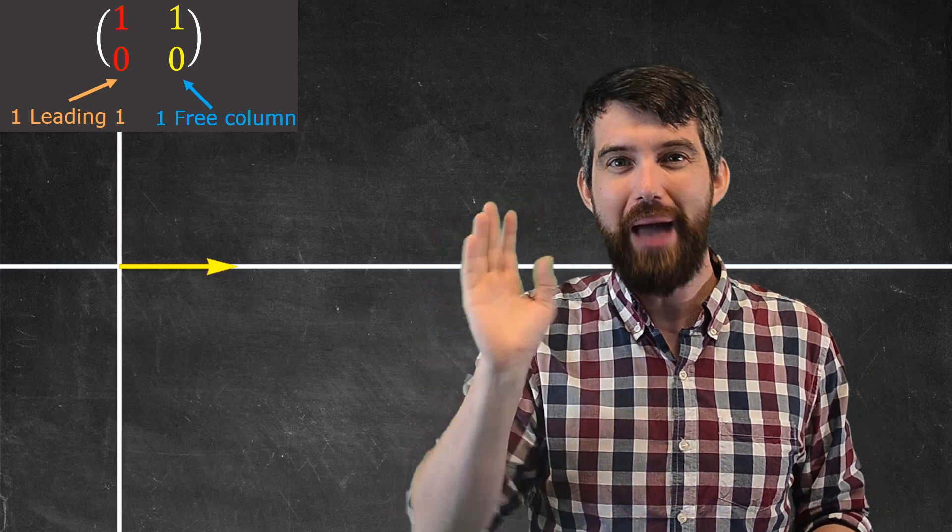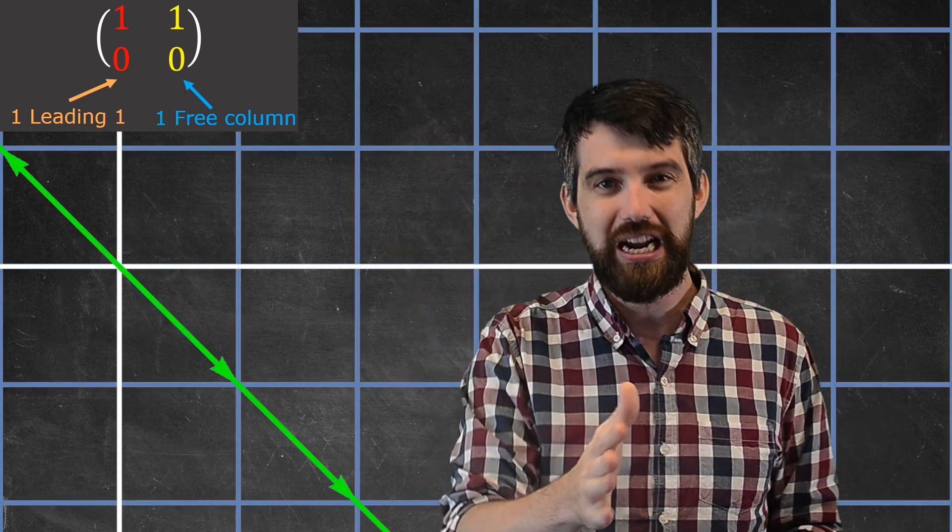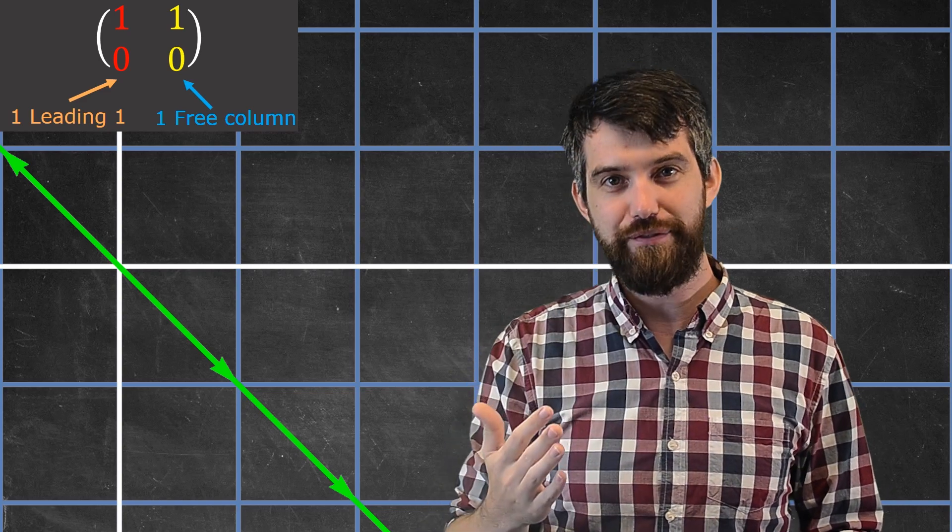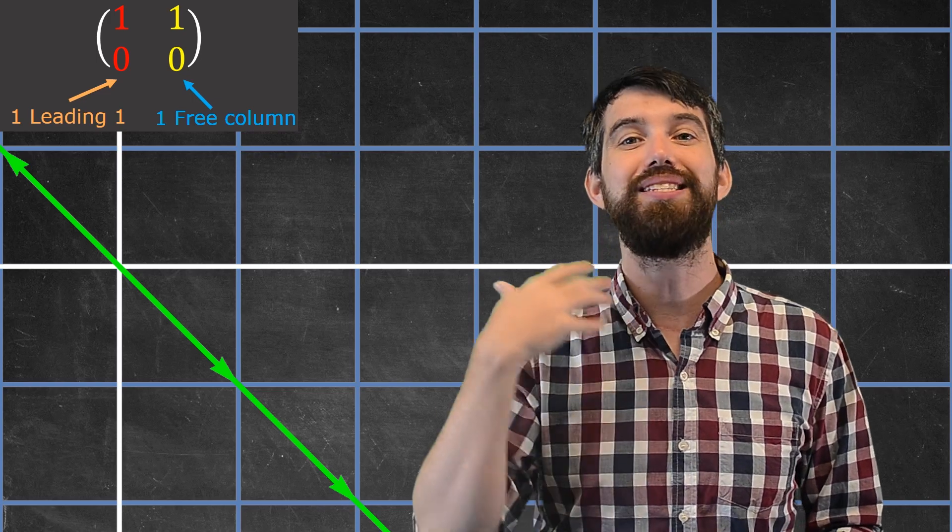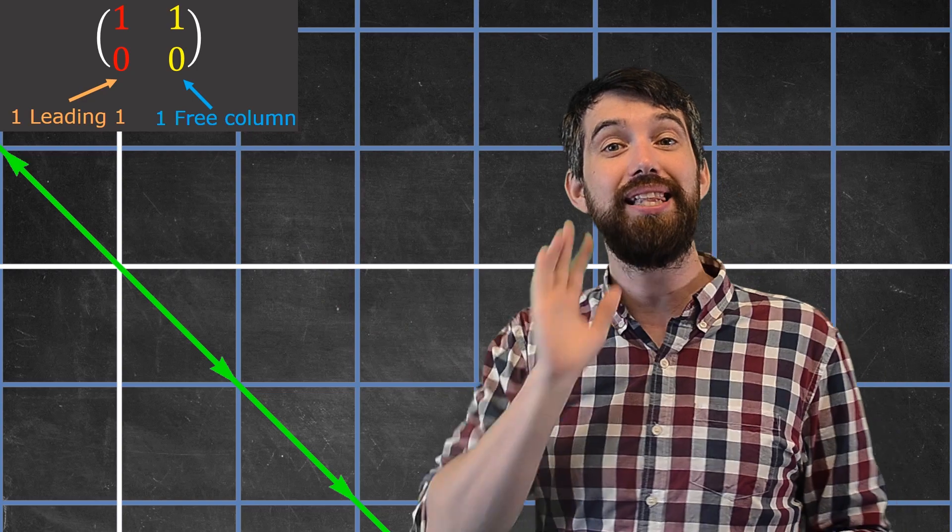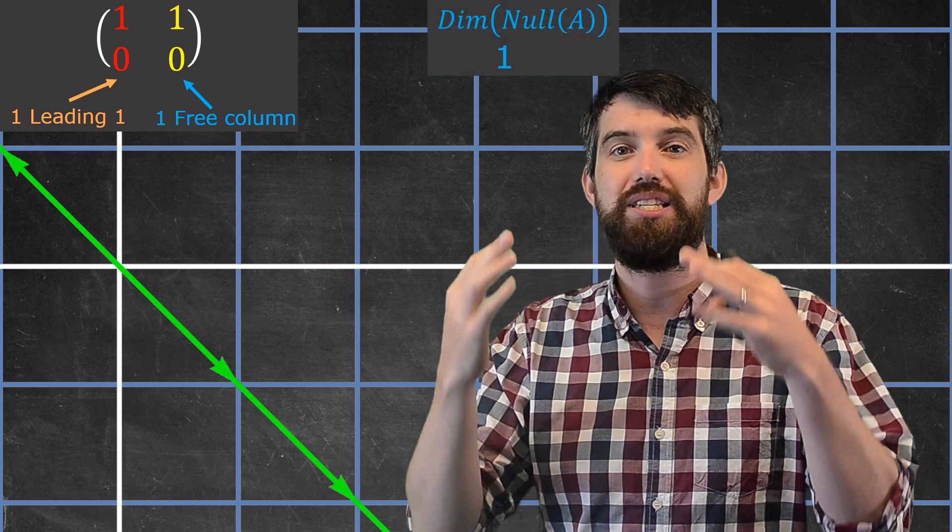First thing, you might recall from the past that there was this entire line here of vectors, all of whom are going to go to 0. So all of these vectors are going to be squished down to the 0 vector when I apply by A, and so I can say the dimension of my null space is 1 because I have this entire line that's going to squish down. So I say the dimension of the null space here is just 1.